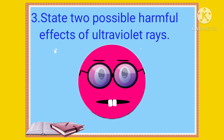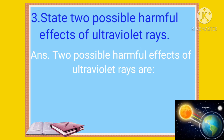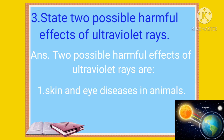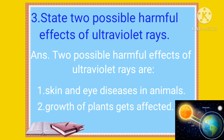Next question: State two possible harmful effects of ultraviolet rays. Answer: Two possible harmful effects of ultraviolet rays are — Number one, skin and eye diseases in animals. Number two, growth of plants gets affected.